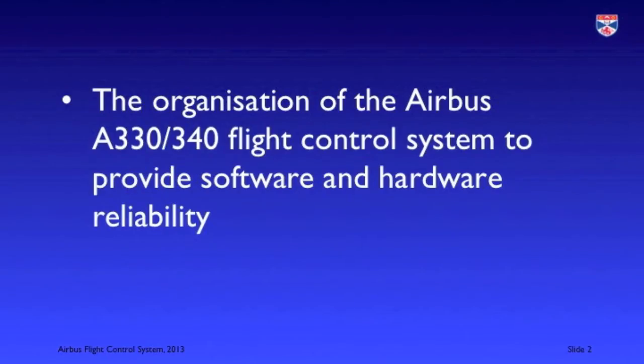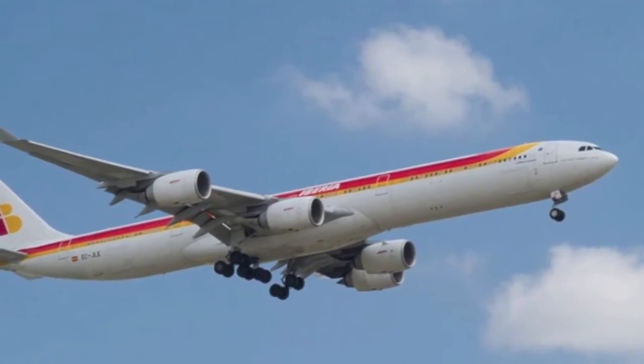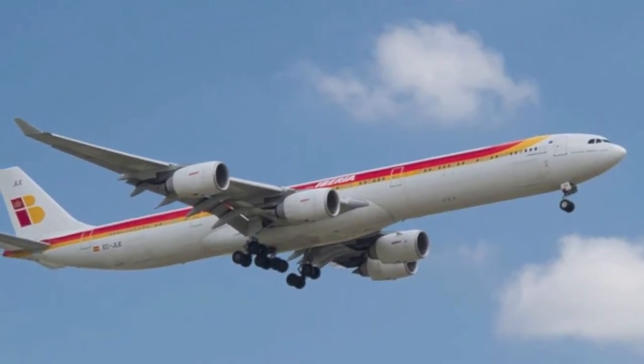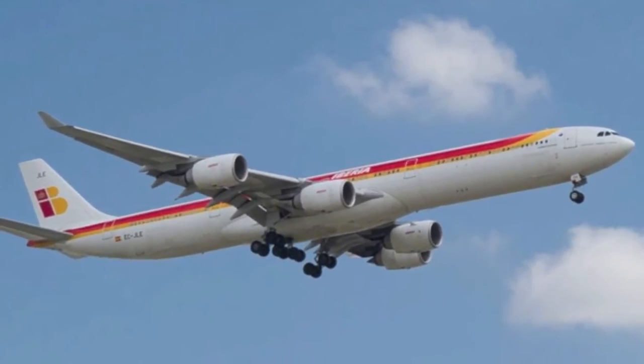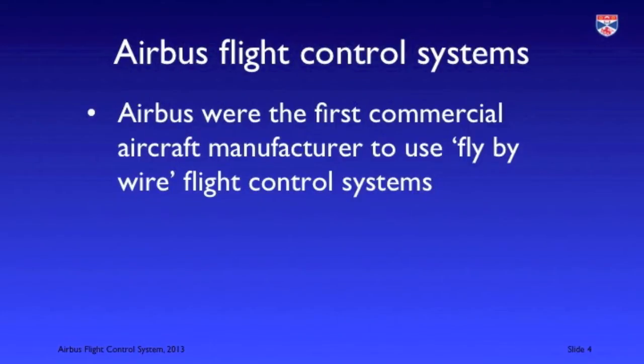I'm Ian Somerville and in this video I'm going to be talking about the organisation of the flight control system on the Airbus 330-340 series of aircraft. This flight control system is a very good example of how redundancy and diversity is used in software and hardware to ensure reliability. Airbus are a major European commercial aircraft manufacturer and they were the first commercial manufacturer to introduce fly-by-wire control for passenger aircraft.